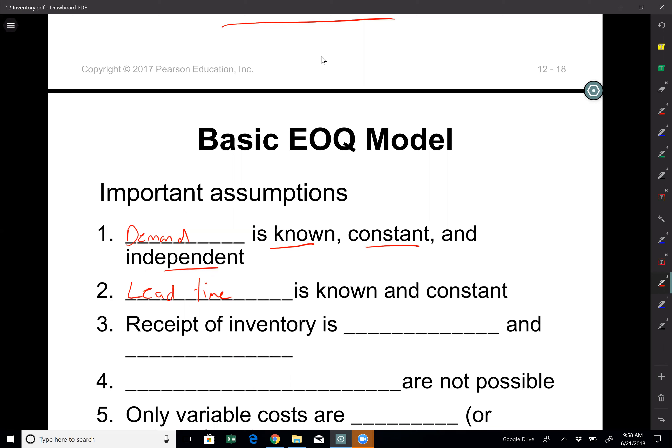Receipt of inventory is instantaneous. So we assume that we receive the inventory right away, it doesn't take some time to complete. We assume that inventory is delivered as we requested. It's not half, it's not 75% or more than what we requested.